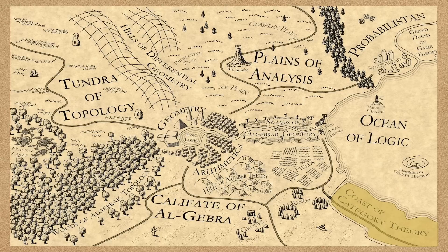On this map, category theory is a coast joining the ocean of logic with a caliphate of algebra, which is certainly true as a part of its function. However,